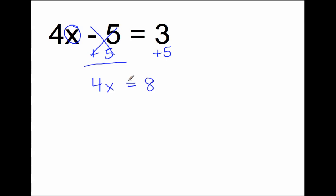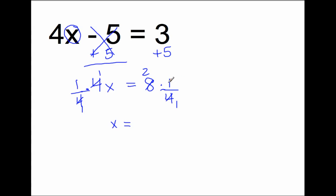4 times what number will give me 8? To get rid of this 4 with respect to x, I'm multiplying x by 4. So I'm going to multiply by the reciprocal — the inverse of multiplying by 4. The inverse of multiplying by 4 is dividing by 4, or multiplying by the reciprocal of 4, which is 1 fourth. So I'll multiply both sides by 1 fourth. The 4s will cancel out and make 1 — that's the inverse property of multiplication. 1 times x is x. And then 8 times 1 fourth means divide 8 by 4, you get 2. So x equals 2.